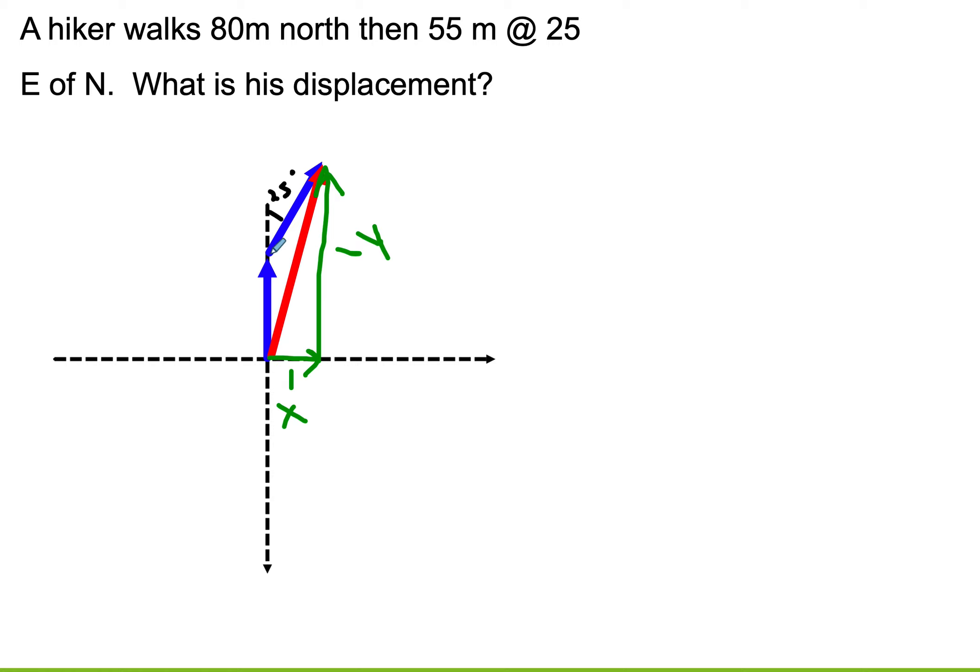What I would have to do then is I would have to figure out, well, what are the y parts of these two vectors? Add them together. Then I would have to figure out what are the x parts of these two vectors? Add them together. And I would have one x and one y, and then I would have a right triangle, and I could figure out that hypotenuse. So this is what we mean when we say that we're going to find the vector components. The vector components are the part of the vector that's in the x direction, and then the part of the vector that's in the y direction.